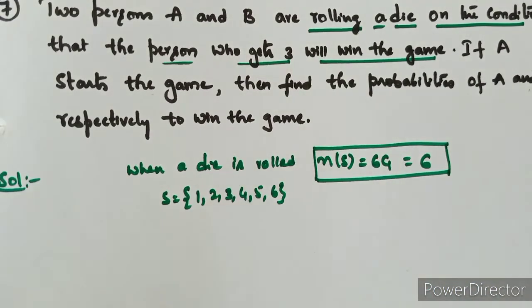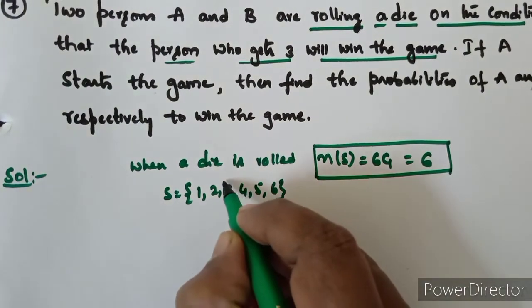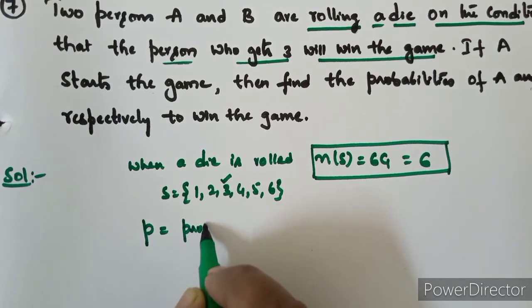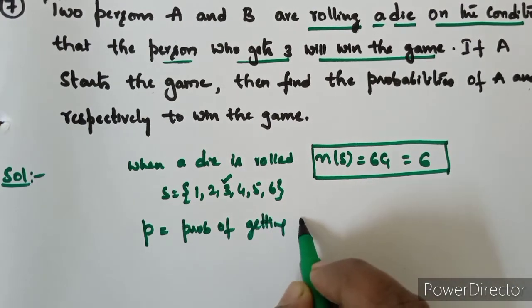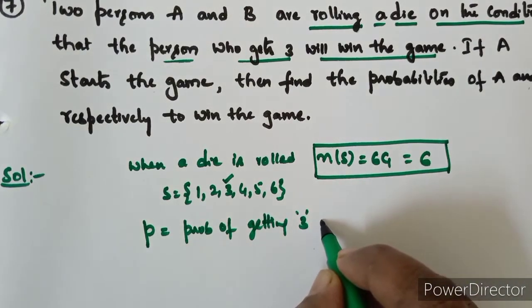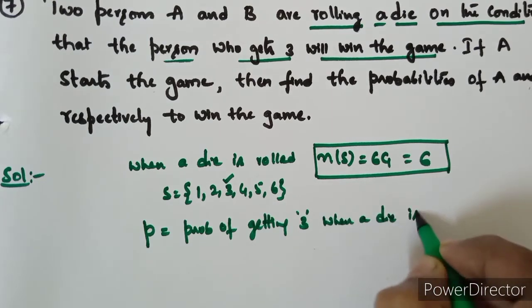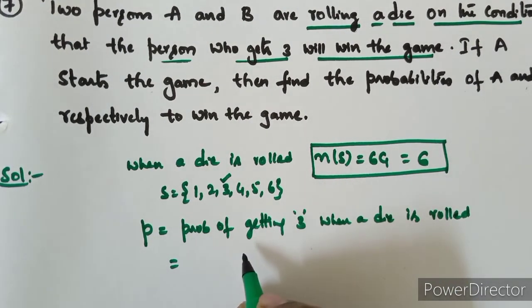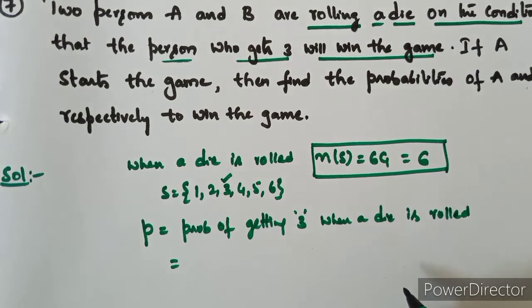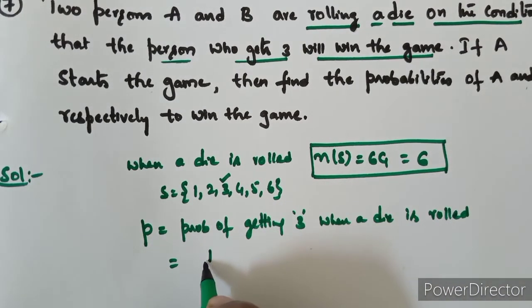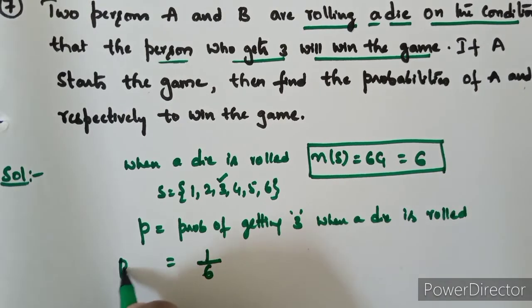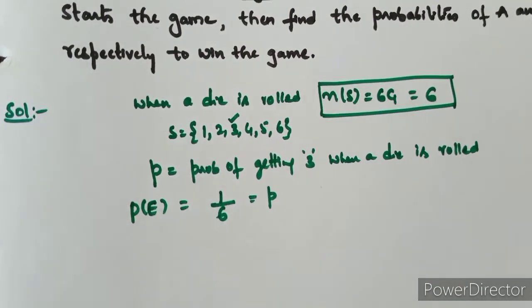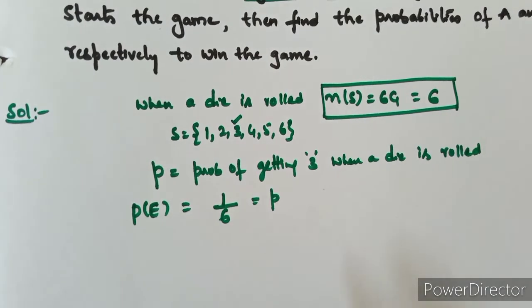This is the favourable outcome. Small p: probability of getting 3 when a die is rolled. n of E is equal to the favourable outcome, so probability of getting 3 is n of E by n of S. We call this p of E or small p. This is the probability of success — getting 3 means success. We use small letter p to denote that.